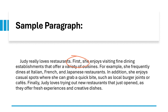First, the paragraph mentions her love for fine dining, providing examples of the types of cuisine she enjoys: Italian, French, and Japanese. Next, it adds another category — casual spots like burger joints or cafes — further expanding on her preferences. Finally, it wraps up with her excitement for trying new restaurants, bringing variety to her experiences. Each type of restaurant is listed step-by-step, making it easy for the reader to follow the structure and understand Judy's diverse tastes in dining. This type of organization allows for a clear and organized presentation of information.